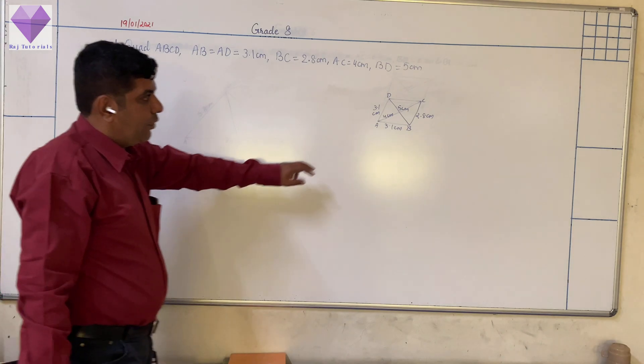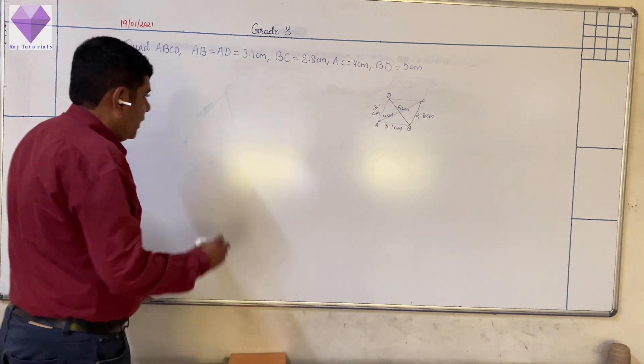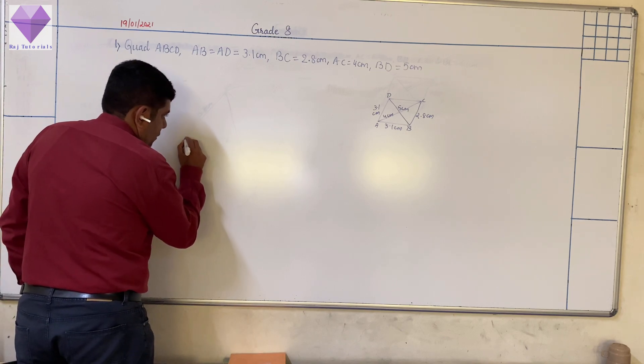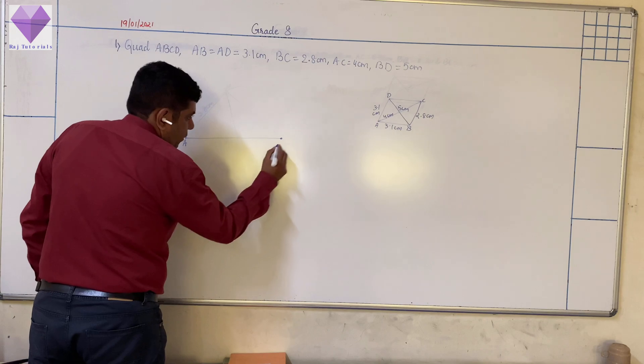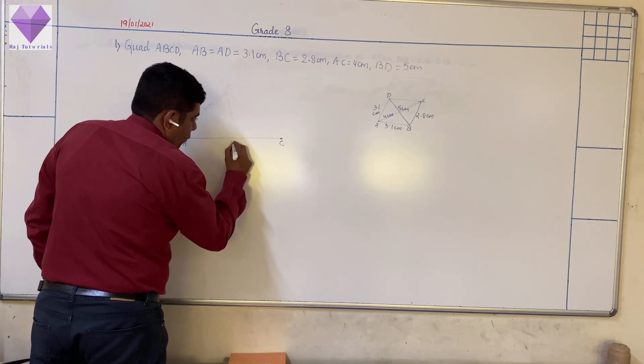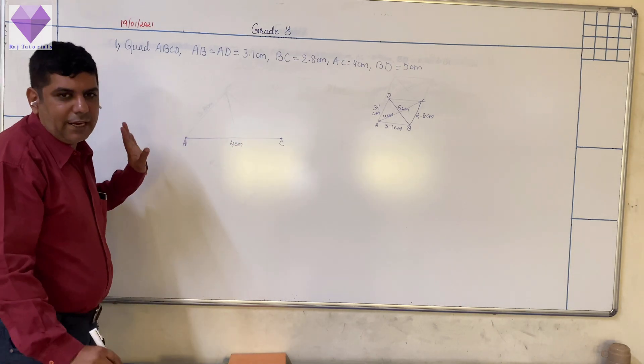So now, I am given two diagonals again, AC and BD. So I am taking first AC diagonal at 4 centimeters. This I have measured and directly I am drawing.